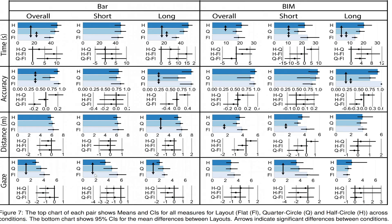A detailed diagram shows all the data collected by the scientists. On the left side are the bar-type charts and on the right are the BIM-type charts. We have an overall score, short distance versus long distance manipulation, and all variables — time, accuracy, distance, and gaze — evaluated across conditions. The top part shows means and confidence intervals of all measures across layouts and conditions, while the bottom chart shows 95% confidence intervals for the mean difference between layouts. Arrows indicate significant differences between conditions.